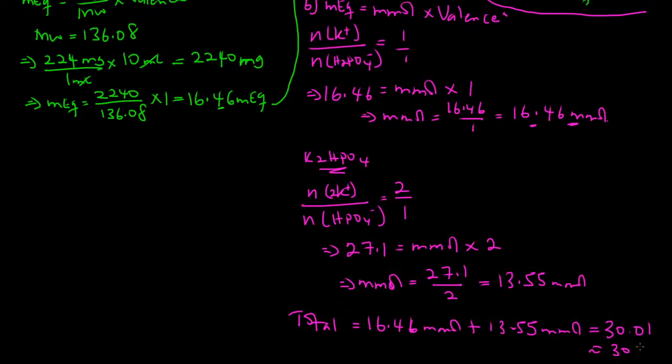To recap, the approach used at the beginning — using the known standard values of 3 millimoles phosphate per mL and 4 milliequivalents potassium per mL — is much simpler and is the recommended approach. The first-principles method using masses gives the same answers. If you have any questions, leave them in the comments. If you like this kind of live interactive session, put that in the comments as well. Thank you so much for watching, and I'll see you in the next video.